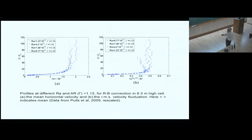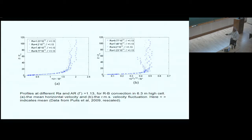Similarly, if you look at velocity fluctuations, the horizontal component is normalized by the Deardorff scale while the vertical velocity is normalized by the viscous scale. This is because the mean flow is driven by the outer scale, whereas what happens near the wall is driven by the viscous scale. The velocity fluctuations in the lateral direction also collapse reasonably well.